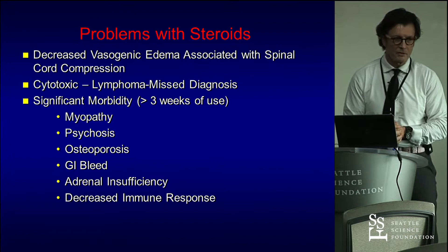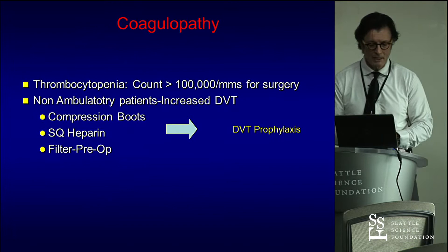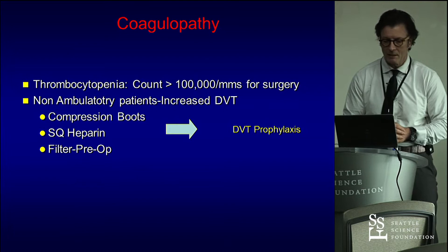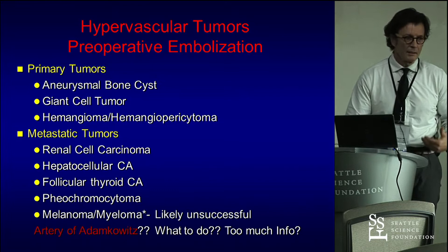Steroids — a lot of these patients are on steroids. There is significant morbidity associated with patients on steroids. The coagulopathy aspect is important — many patients are thrombocytopenic with low platelet counts. They are non-ambulatory sometimes, with increased risk for DVT. You may want to think about prophylactic filter placements. All those things are critical.